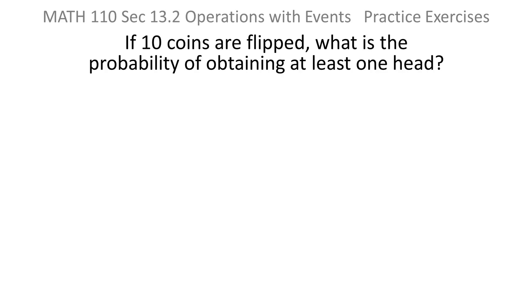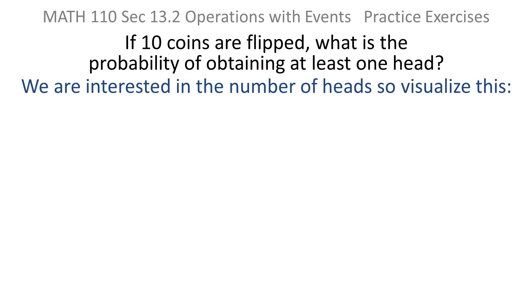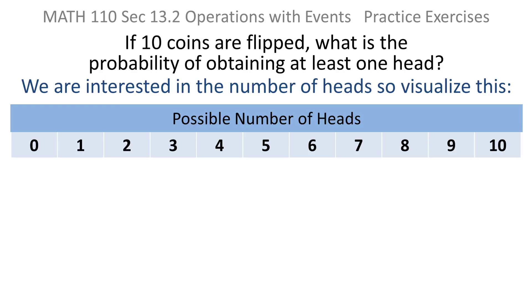If ten coins are flipped, what is the probability of obtaining at least one head? We want to know about the number of heads, so you might want to actually visualize it. If you're tossing a coin ten times, you could get anywhere from no heads all the way up to ten heads and anything in between.